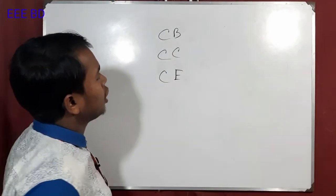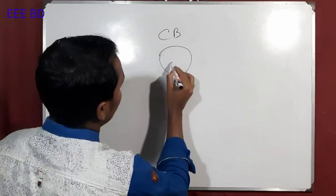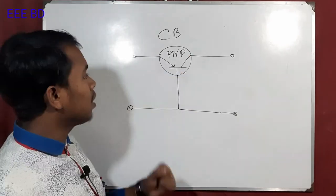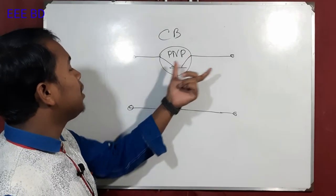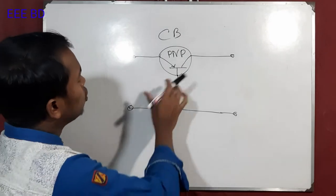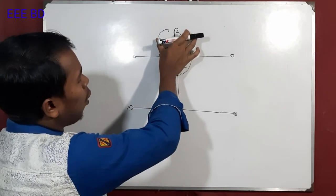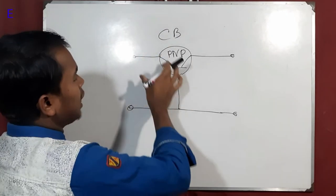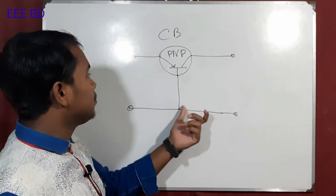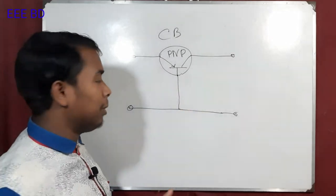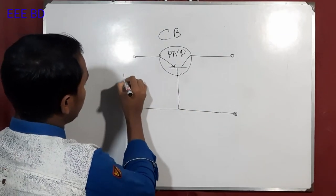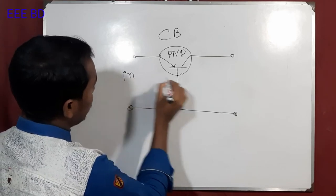First of all, we have a Common Base Configuration. In this configuration, the base pin is common, and the base pin is known as the input. So there will be the input.